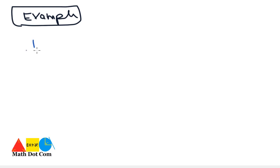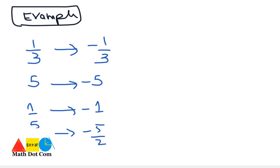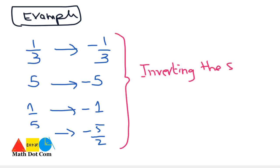How can you find the additive inverse of a certain number? For example, the additive inverse of one by three is minus one by three. The additive inverse of five is minus five. The additive inverse of five over two is minus five over two. So in finding the additive inverse, you are just inverting the sign.